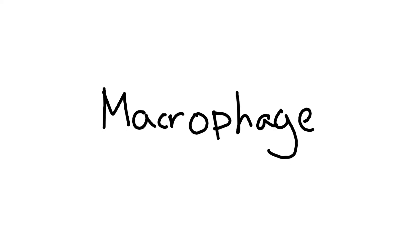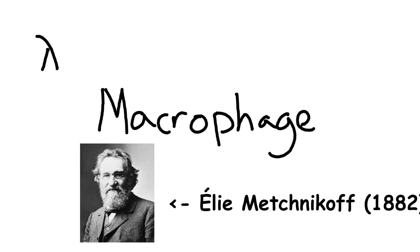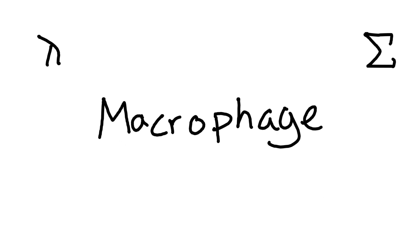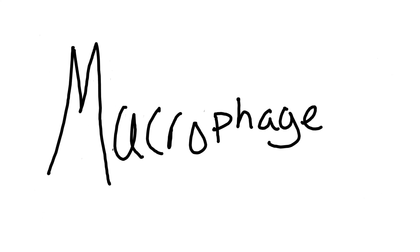But where does the word macrophage actually come from? A Russian scientist named Ilya Mechnikov coined the term in 1882. It comes from Greek—macro meaning big, and phage meaning eat. So macrophages literally mean big eater, and that's exactly what they do to keep you safe.